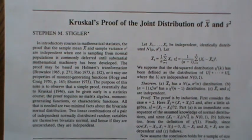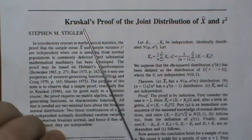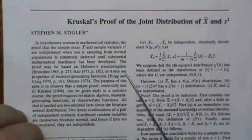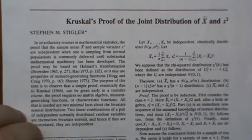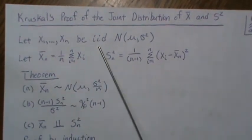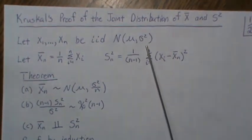Hello. In this video we give a proof on the independence of the sample mean and the sample variance when our data are normally distributed. I was looking for a different article when I happened to see the title of this and it intrigued me. It deals with proving that the sample mean and sample variance are independent when our data are normally distributed, and it's an article from Stefan Stigler. We have data that are independent identically distributed normal random variables with mean mu and variance sigma squared.